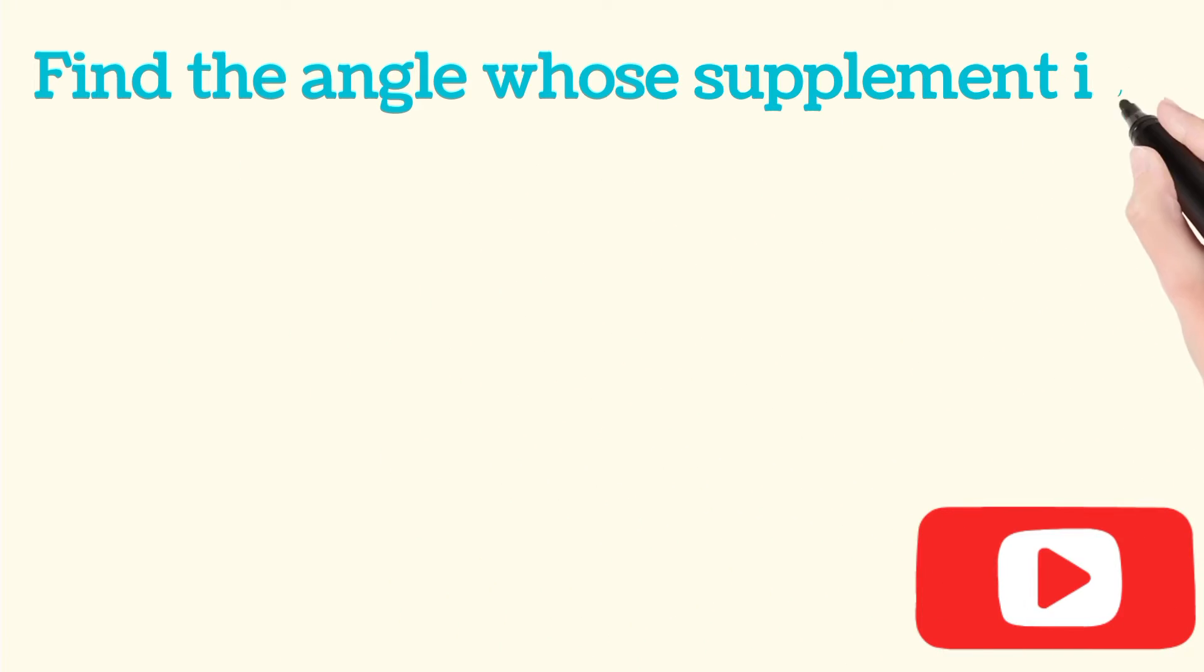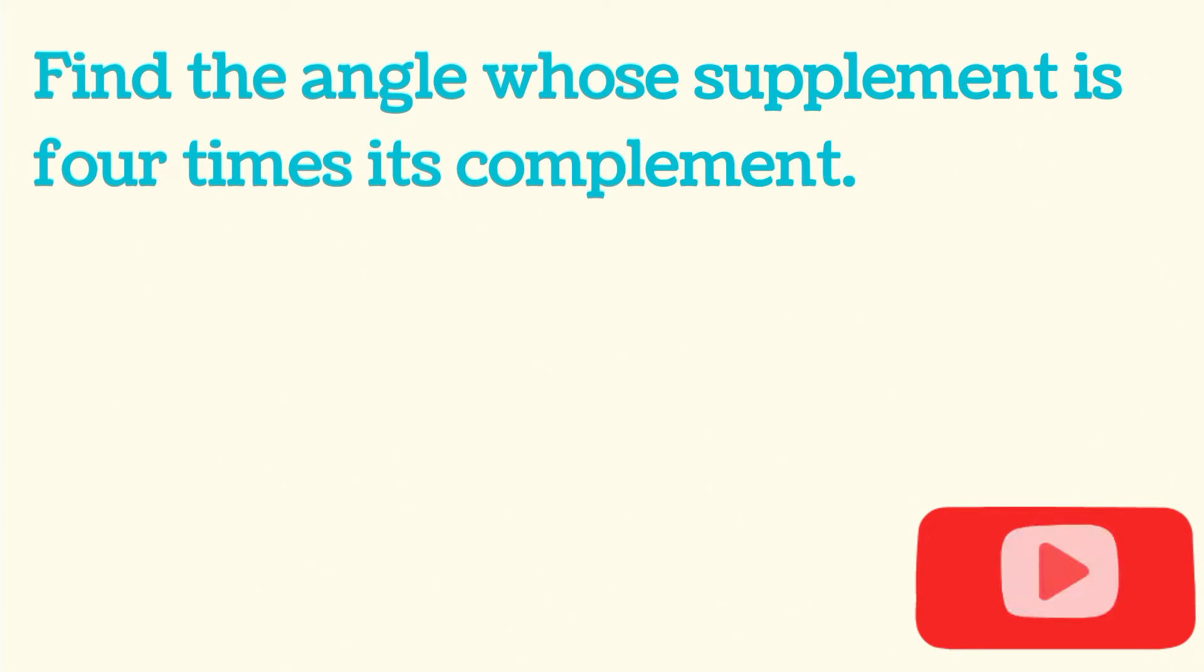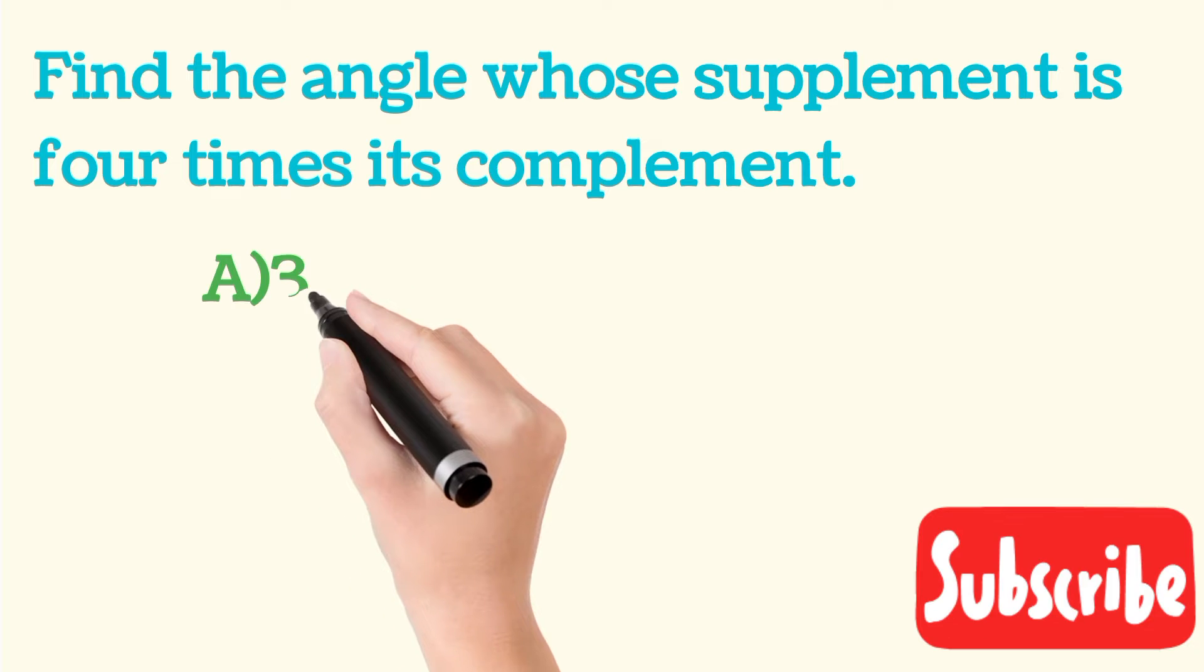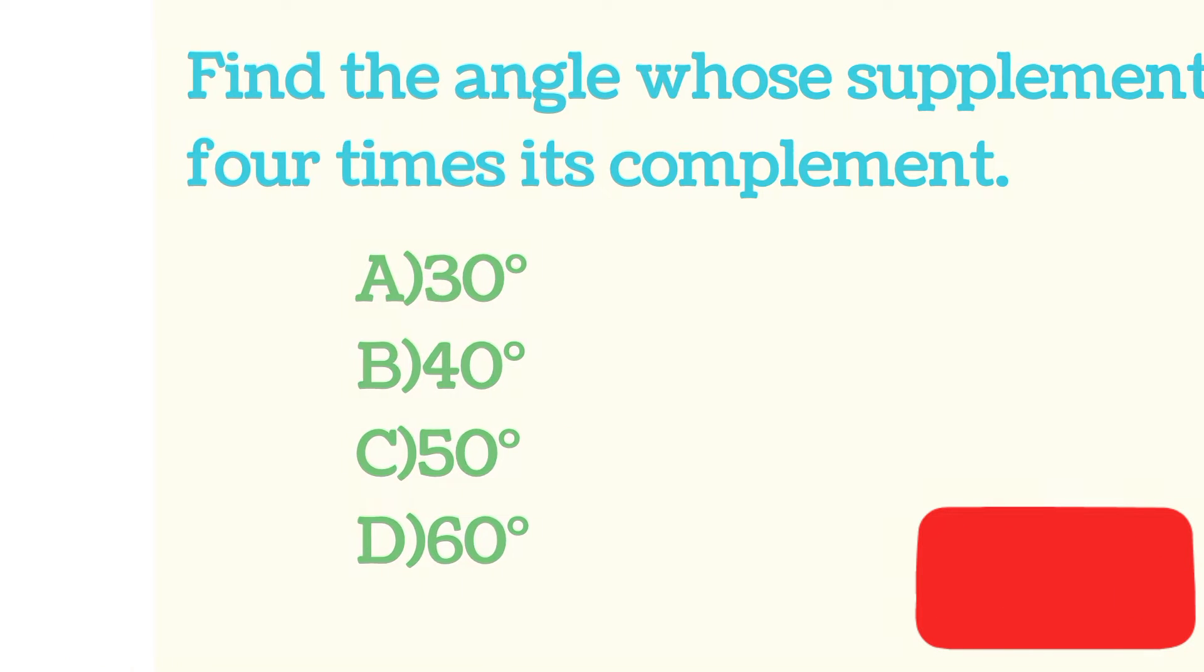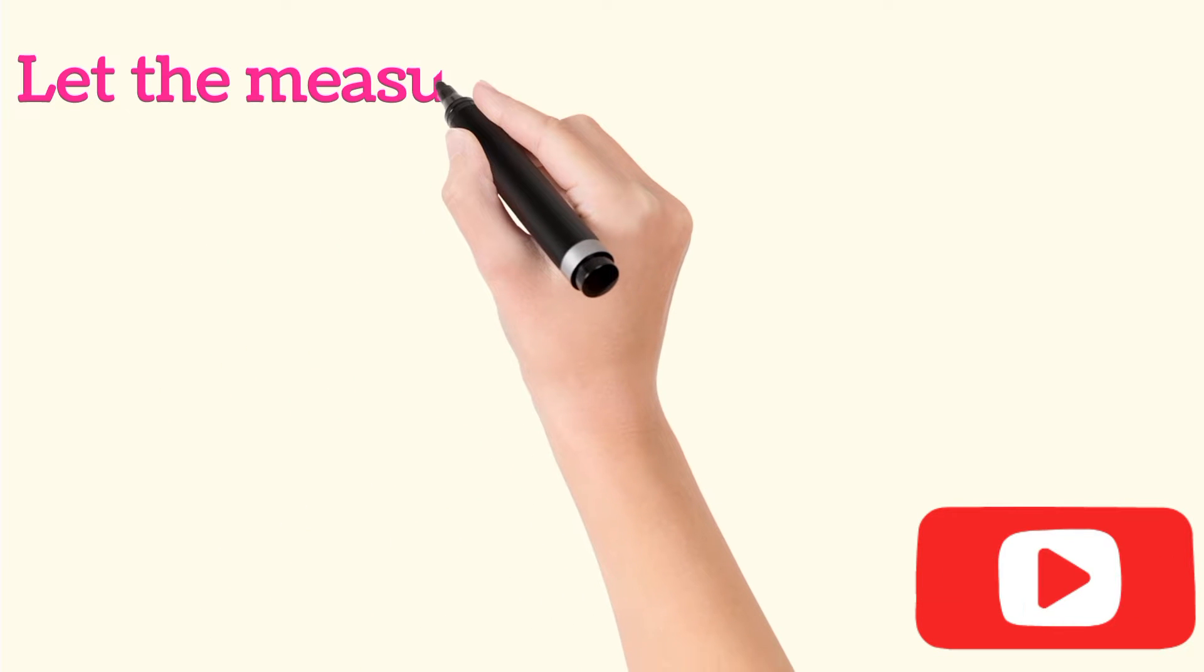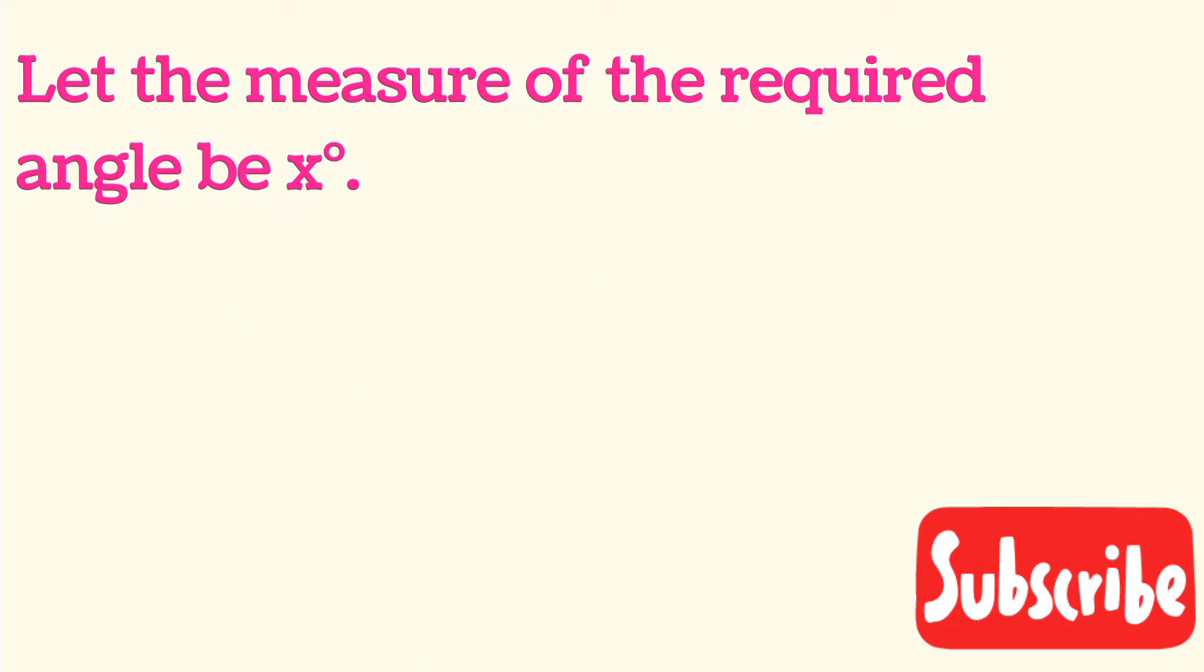Find the angle whose supplement is 4 times its complement. The options are: A) 30 degrees, B) 40 degrees, C) 50 degrees, and D) 60 degrees. Let us assume that the measure of the required angle is x degrees.